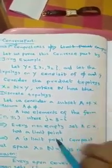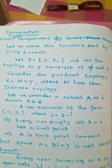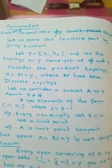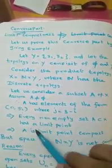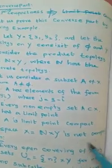From the product topology, X is equal to N cross Y, where N is the set of all integers with the discrete topology. Consider a non-empty subset A of X. The elements of A are of the form (n, y_i) where n belongs to N and y_i belongs to Y. Every non-empty subset A of X has a limit point, so the space X is limit point compact.